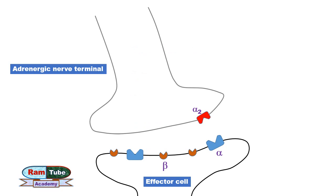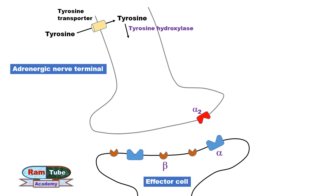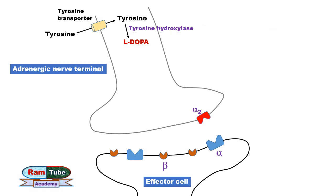In the first step, amino acid tyrosine is actively transported inside the neuron through the tyrosine transporter along with sodium ions. Once inside the neuron, tyrosine gets hydroxylated in the presence of the enzyme tyrosine hydroxylase to form L-dihydroxyphenylalanine, that is L-DOPA or levodopa. This conversion can be blocked by alpha-methyl para-tyrosine.